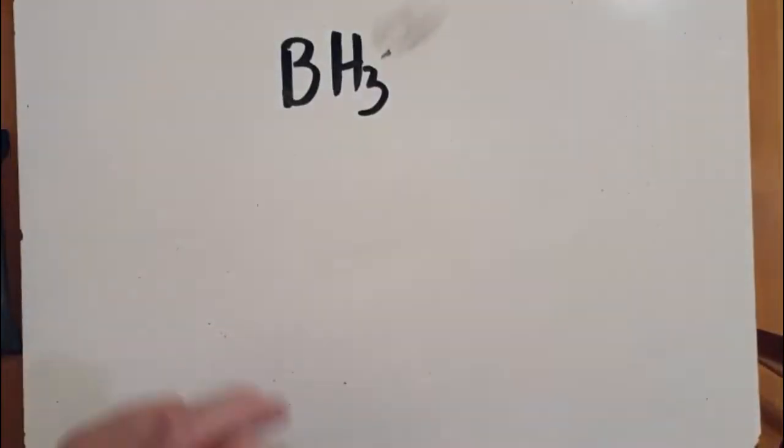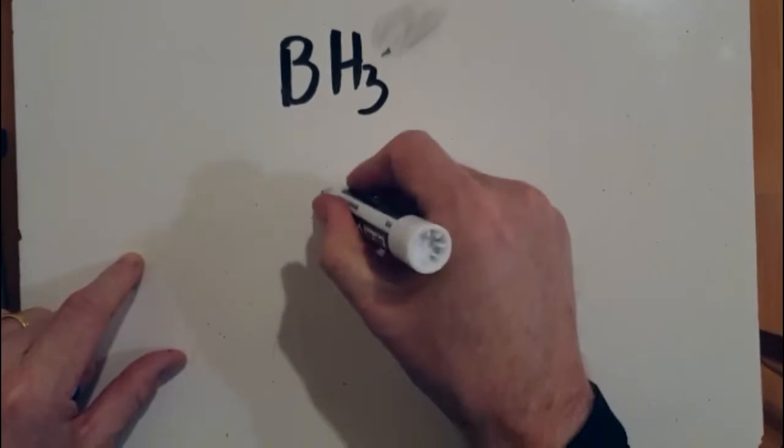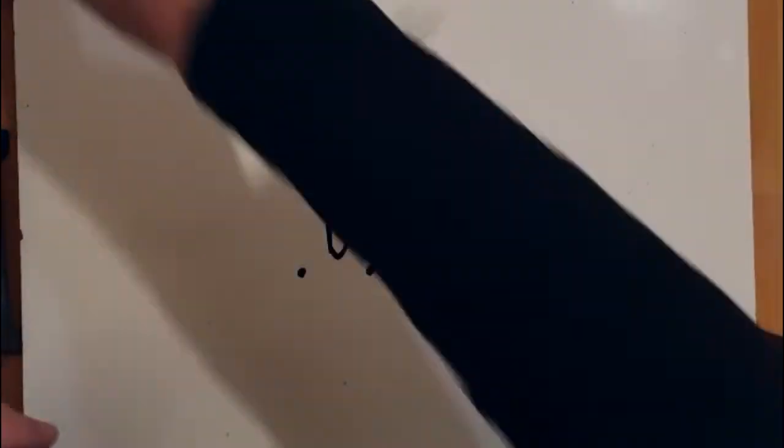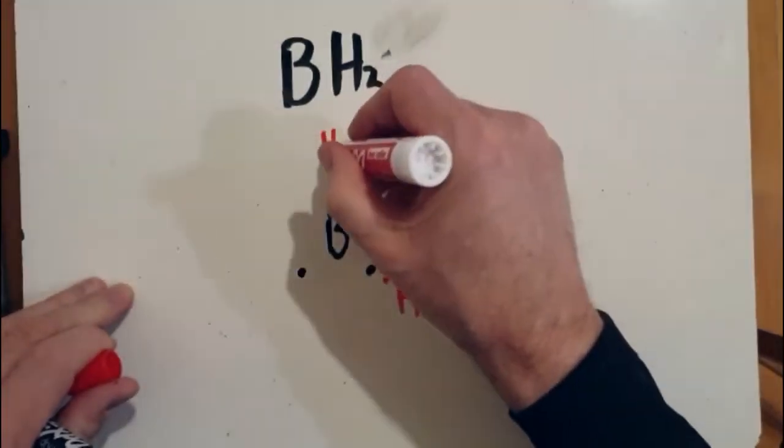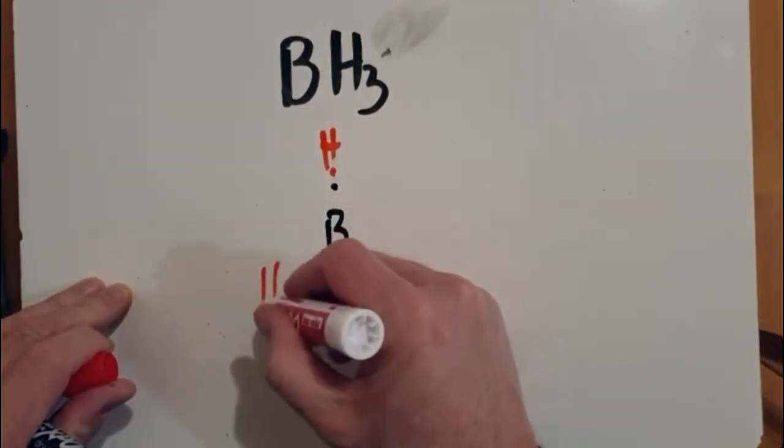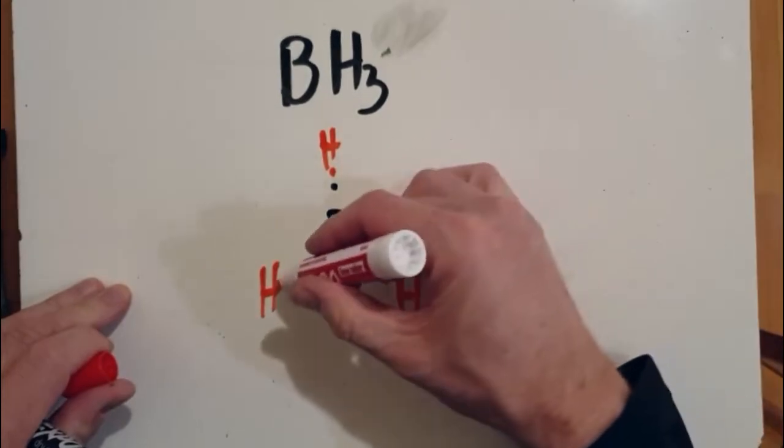The other way you could draw this, there's two ways you can draw most Lewis structures, is boron is in group 13, so I've got three electrons, and hydrogen is in group one. I've got one electron and then just pair them up. That gives you the same answer.